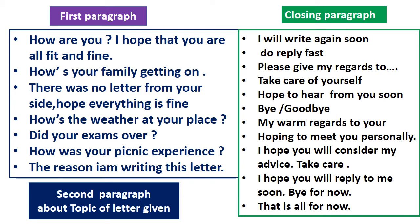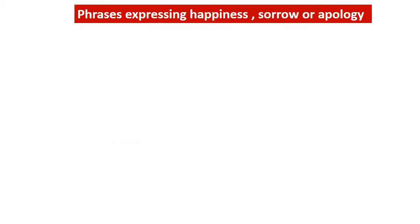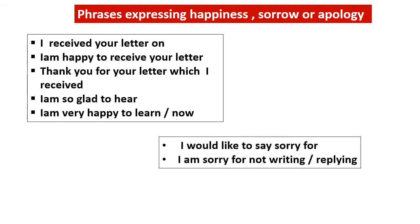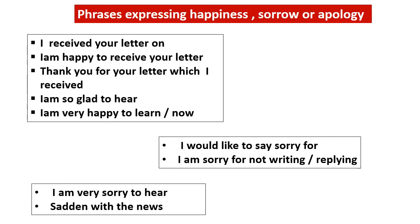There are certain phrases which express happiness, sorrow, and apology. To express happiness: 'I received your letter and I'm happy to receive it,' 'Thank you for your letter,' 'I'm so glad to hear,' 'I'm very happy to learn.' To express sorry: 'I would like to say sorry for...' and write the reason, or 'I'm sorry for not writing or not replying.' For condolences: 'I'm very sorry to hear' or 'Saddened with the news' — this is especially for expressing feelings to a person who has lost something.